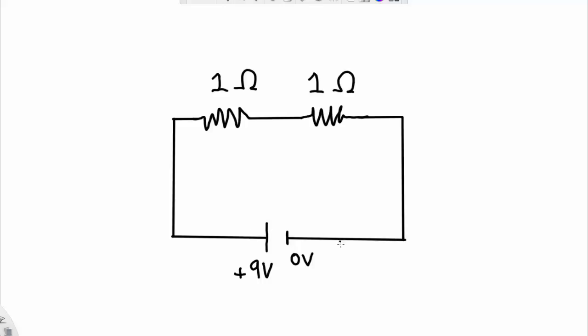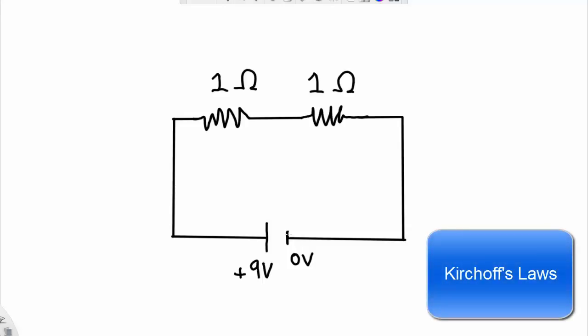So how can I predict how much current is going to flow through this circuit? Well, the way that I can do that is I can use two very special rules, and they're called Kirchhoff's Laws.